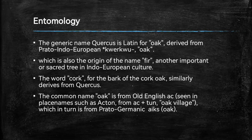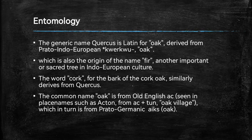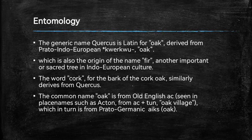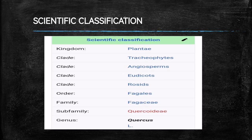Next is etymology. The generic name Quercus is Latin for oak, derived from Proto-Indo-European Querco, which means oak, which is also the origin of the name FIR and other important words in Indo-European culture. The word cork for the bark of the cork oak similarly derives from Quercus. The common name oak is from Old English AC, seen in place names such as Acton and Oak Village, which in turn is from Proto-Germanic, meaning oak.